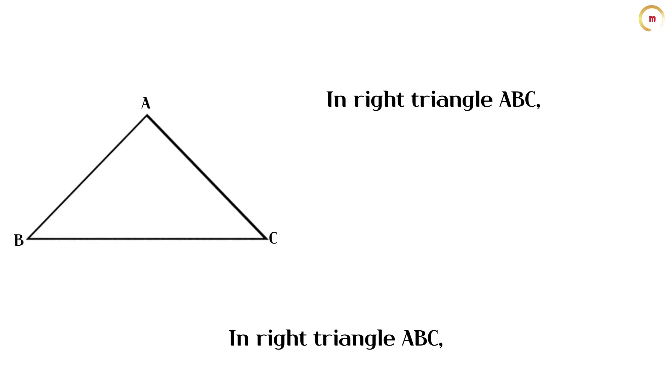In right triangle ABC, the length of AB is 3, and the length of AC is 3.